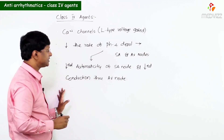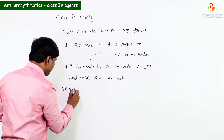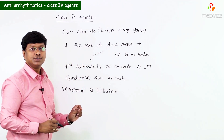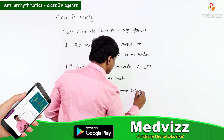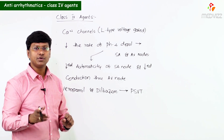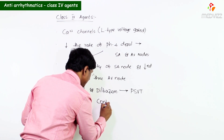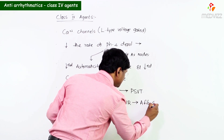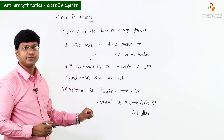The drugs in this class include Verapamil and Diltiazem. They are mainly indicated for paroxysmal supraventricular tachycardia, and they are also indicated for control of ventricular rate in atrial fibrillation and atrial flutter.